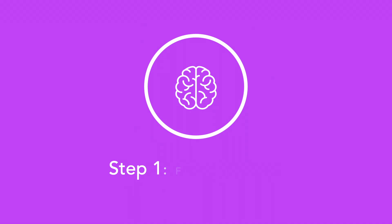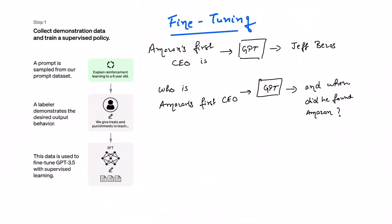Now we have GPT which is trained on vast amount of internet data with an objective to predict the next word. So out of the box it has this tendency to do pattern completion. So for example we might say Amazon's first CEO is and it might give the next word output as Jeff Bezos, but what if the input is a question, who is Amazon's first CEO? GPT might just complete the sentence and output and when did he found Amazon.